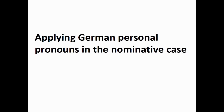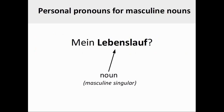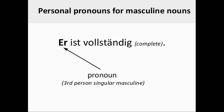Let's now take a look at how we could apply German personal pronouns in the nominative case. The explanations that follow will help you to complete the related online course activity. The grammatical gender of the German noun Lebenslauf, or resume, is masculine and the number of the noun is singular. If you were to see the definite article of the noun here, it would be der. Since Lebenslauf is a masculine singular noun, the matching personal pronoun to be used is er — masculine, third person singular.